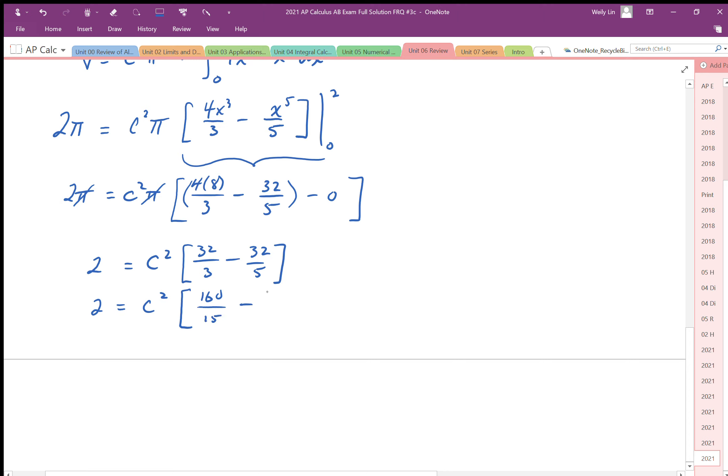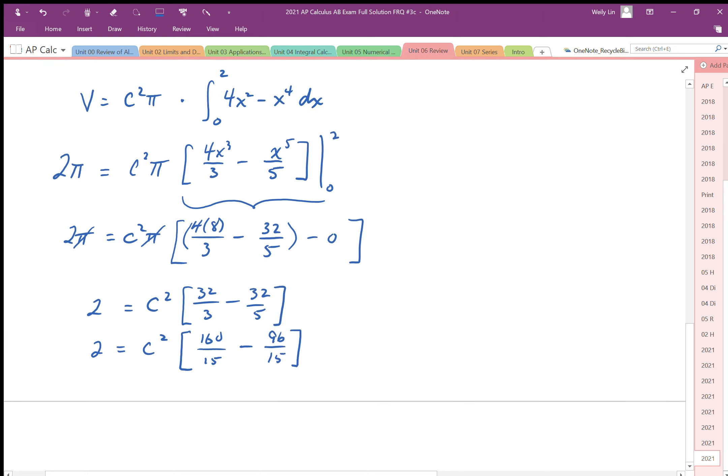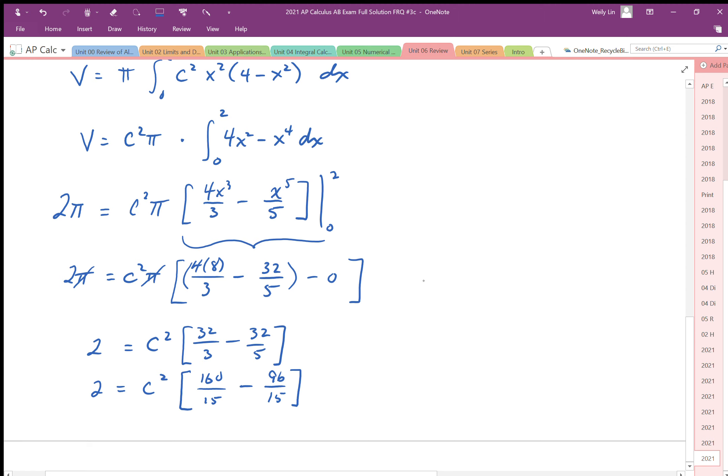So this works out to 160/15 minus 96/15. Okay, I'm just going to move this over to here. So I end up with 2 = c² times 64/15.